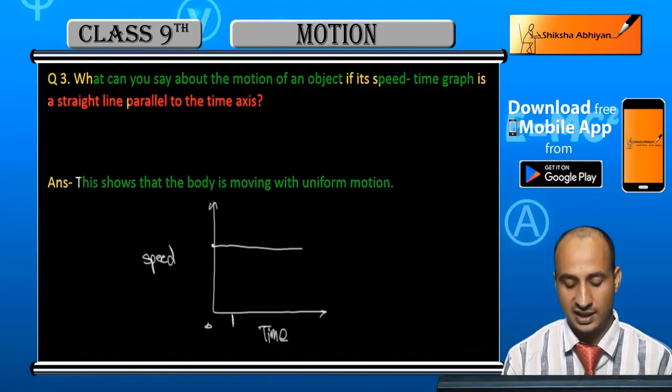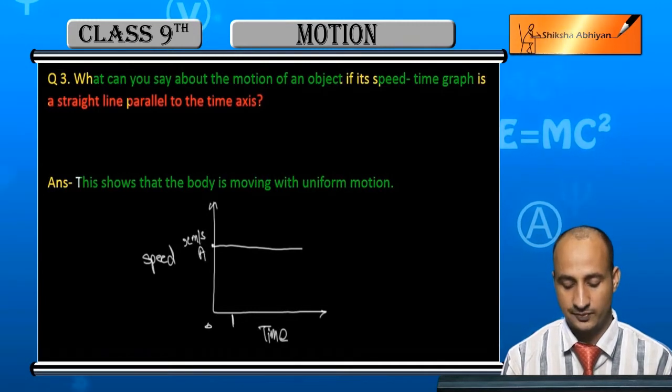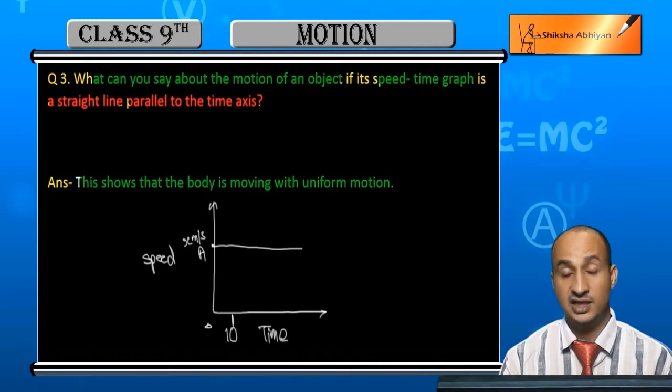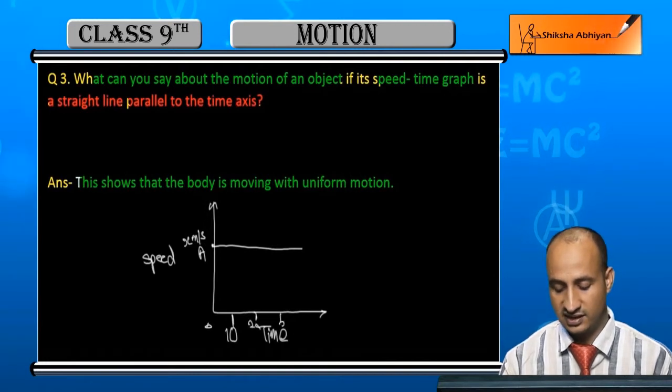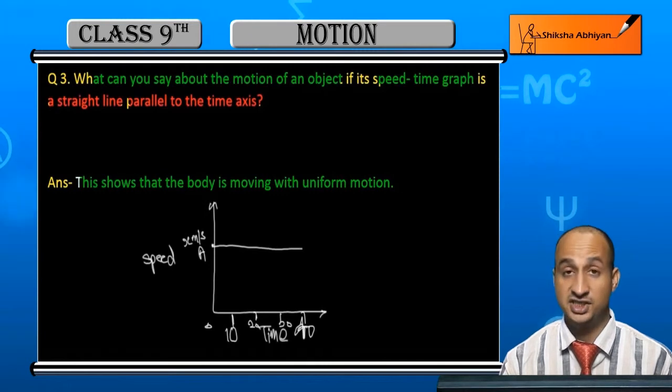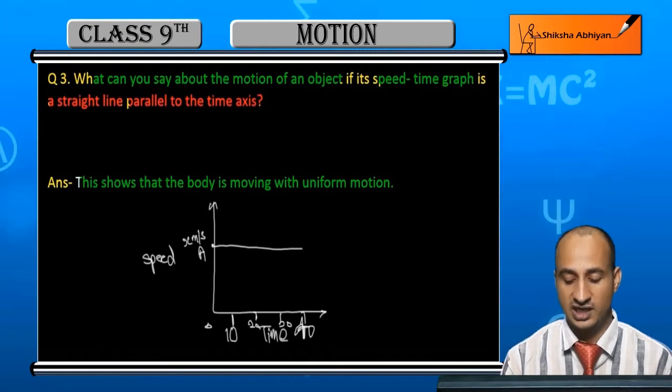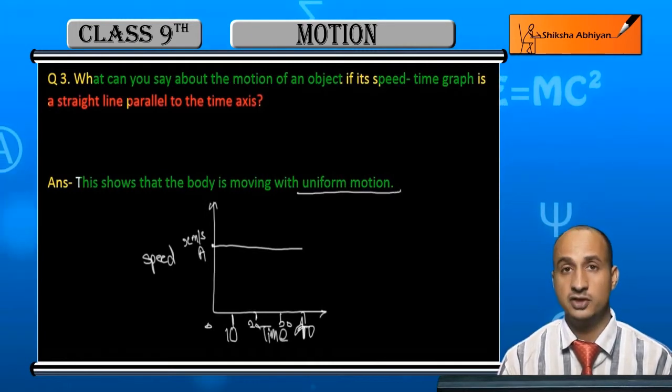For example at zero seconds, the speed here is x meter per second. At 10 seconds, it's x meter per second. At 20 seconds, maybe 30 seconds, and so on, 40 seconds. The speed doesn't change, and that means uniform motion.